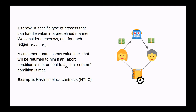We also assume that we have escrows, who are specific processes that can handle value in a predefined manner. For instance, for each ledger, some customer can store value in an escrow, and this value will be transmitted to the next customer only if some condition is met; otherwise, the value will be returned to the sender. If we are using a blockchain, escrows can be implemented with hash time lock contracts or smart contracts. If we are using a bank, escrows can simply be notaries or legally binding contracts.